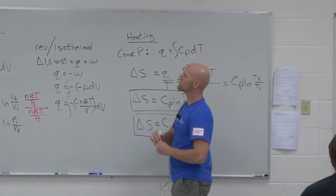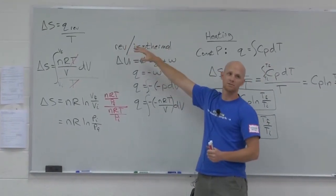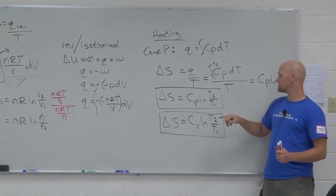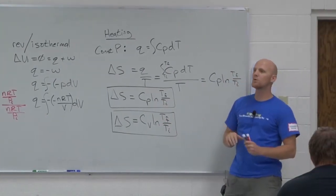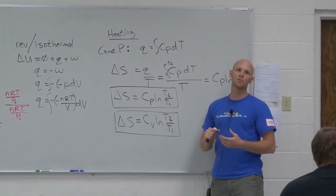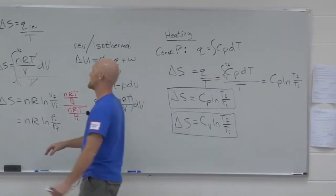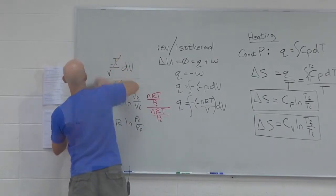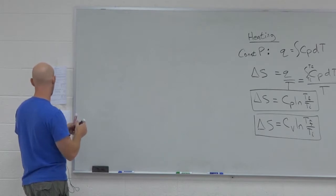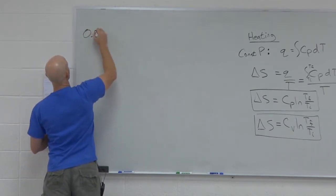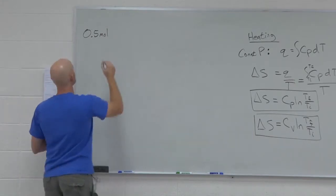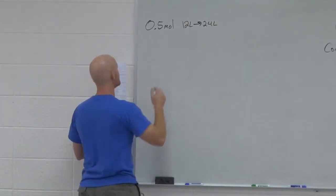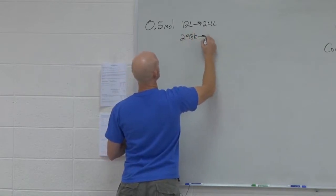So now we know how to deal with a reversible isothermal expansion or compression at constant temperature, and we know how to deal with situations where temperature is changing at either constant volume or constant pressure. What you're more likely going to end up doing is dealing with a situation where multiple things are changing. The question on your sheet says: calculate the entropy change when 0.5 moles of a perfect gas expands from 12 liters to 24 liters, and is simultaneously cooled from 298 Kelvin to 200 Kelvin.